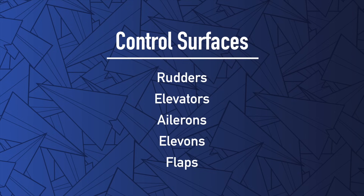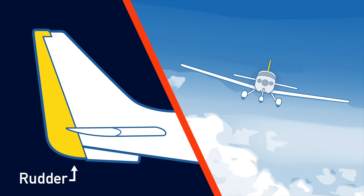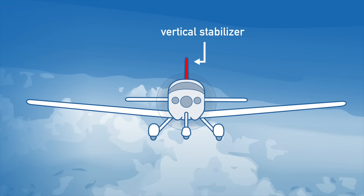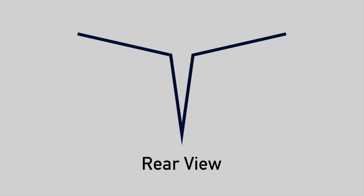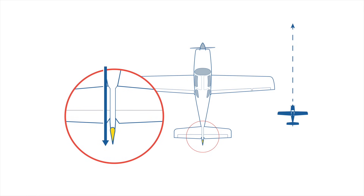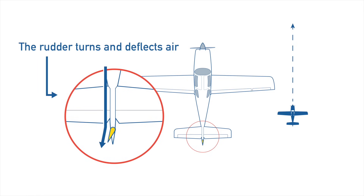Rudders control the yaw of a plane and are used to help it turn left or right. A rudder is located on the vertical stabilizer of a plane. Essentially, a vertical stabilizer is a surface that is either perpendicular to the wings or nearly perpendicular to the wings. It helps prevent the plane from rolling unintentionally and gives it directional stability. On real planes, the vertical stabilizer is usually a tail, but on many paper airplanes the only vertical stabilizer is the body of the folded plane.